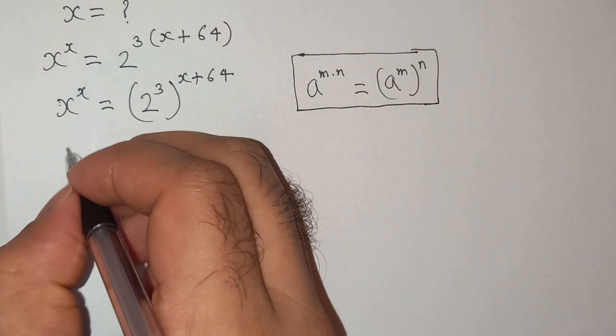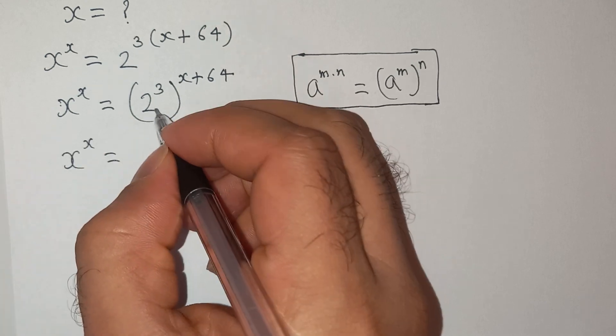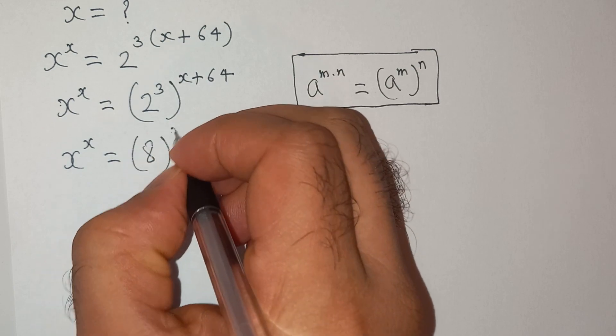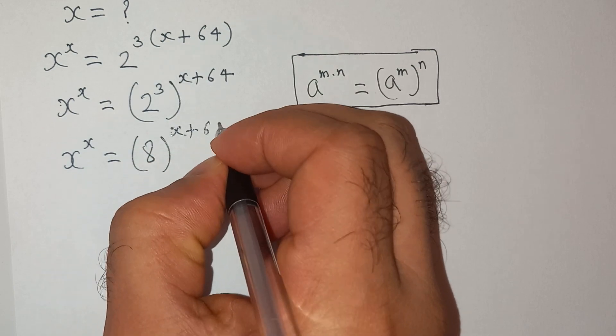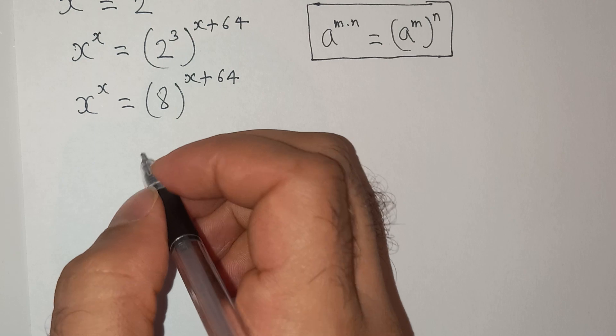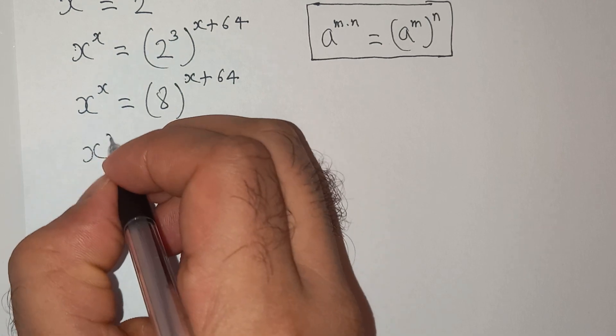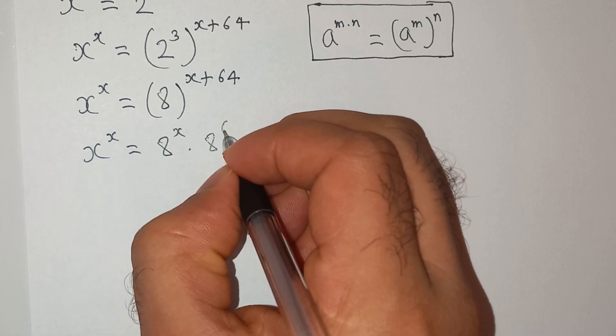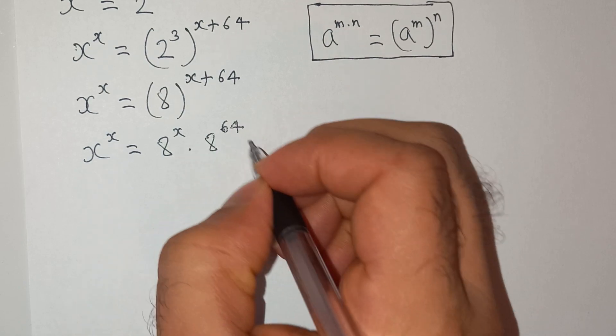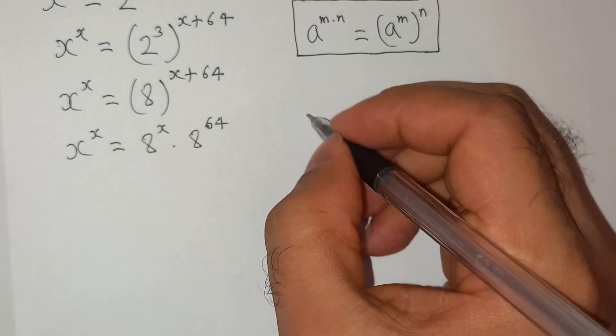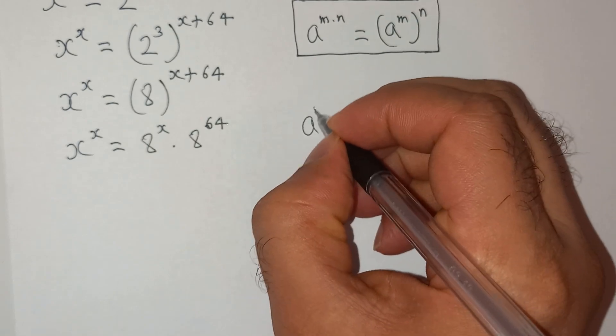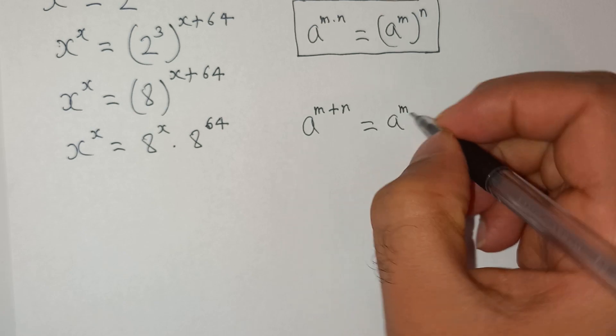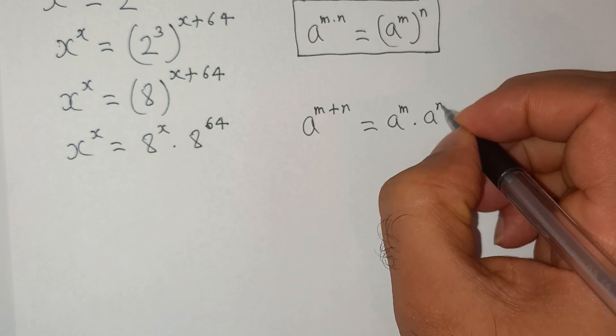Now this can be written as x power x equals to 2 cube is 8 power x plus 64. Now this is same as x power x equals to 8 power x multiplied 8 power 64. So I have used this exponential rule which is a power m plus n equals to a power m multiplied a power n.